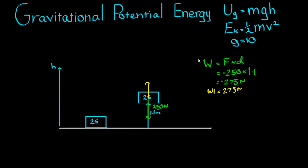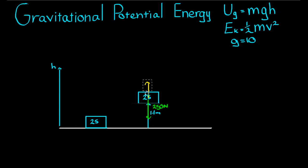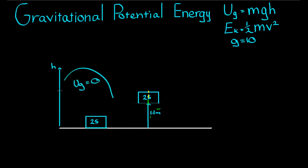That's the way we could solve it if we knew nothing about gravitational potential energy. Now let's look at the gravitational potential energy method. The object on the ground has a different gravitational potential energy to the object up at height. Gravitational potential energy is basically how much energy the object would have if it fell from that height and hit the ground. Since the object is sitting on the ground, the gravitational potential energy in this case is zero, because H in the formula is equal to zero.